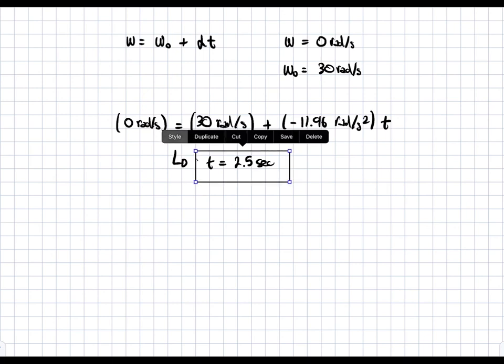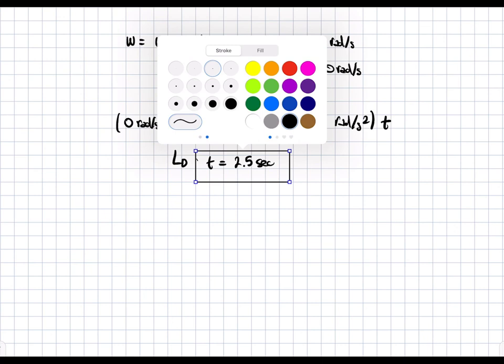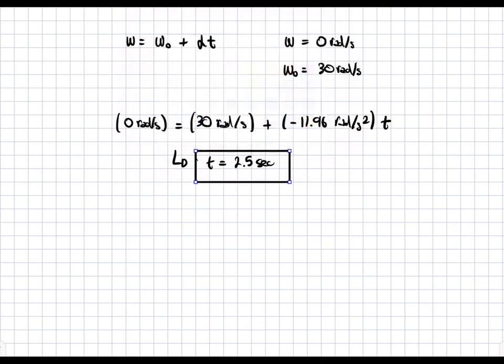Solving for t gives t equals 2.5 seconds. This is the time required for the angular velocity to go from 30 radians per second to zero.